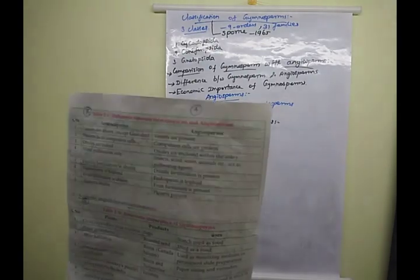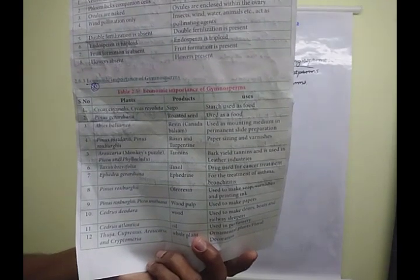From Pinus insularis and Pinus roxburghii we get rosin and turpentine, mainly used in varnishes. From Araucaria, Picea, and Phyllocladus we obtain tannin from the bark, which is mainly used in leather industries.